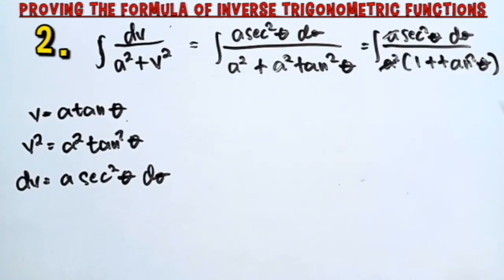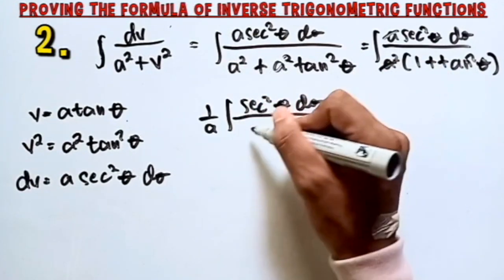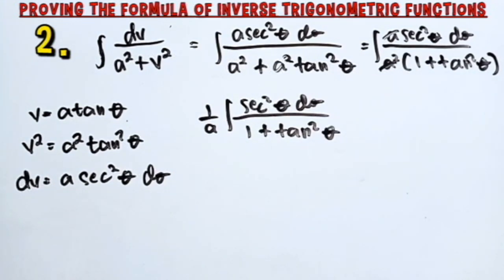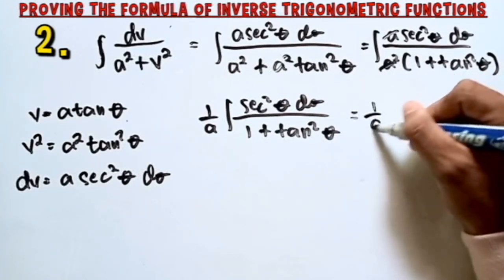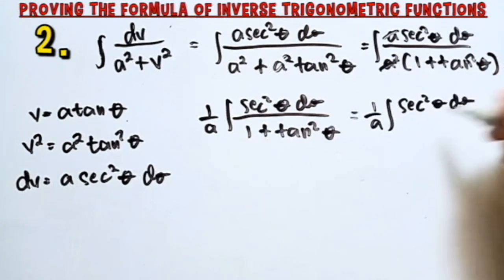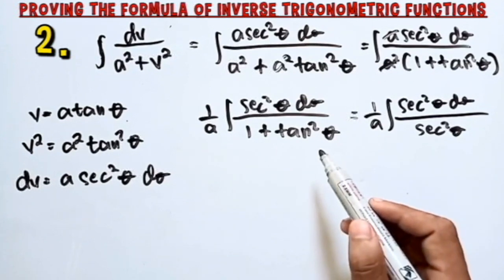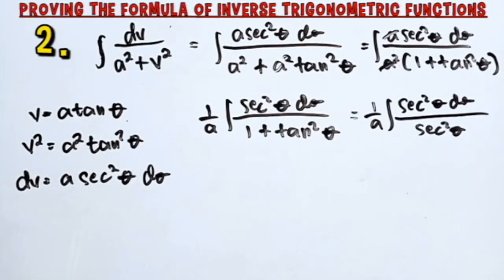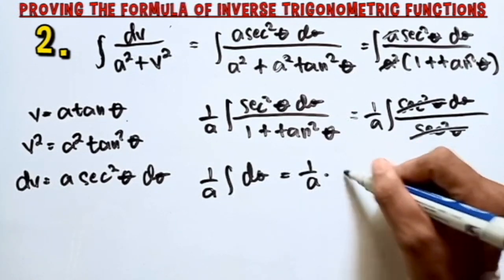Notice that the a in the numerator cancels with one factor of a from a², leaving 1/a as a constant outside the integral. Therefore the integral equals (1/a) times the integral of sec²θ dθ over (1 + tan²θ). Notice that 1 + tan²θ = sec²θ, so these cancel, and the integral simplifies to (1/a) integral of dθ, which equals (1/a)θ + c.